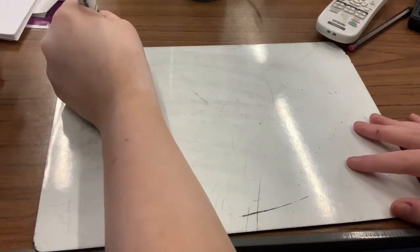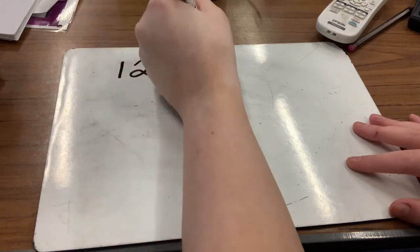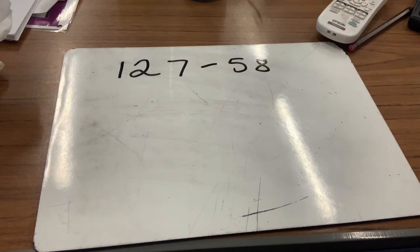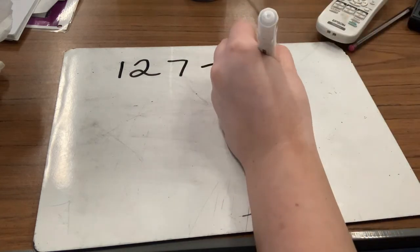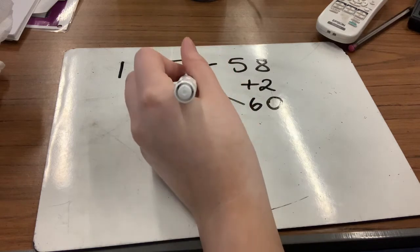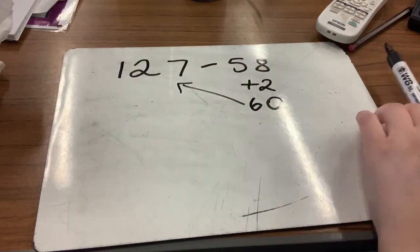Okay, last example we're going to do together. We've got 127 take away 58. Give that one a go. Pause me now. Okay, so I'm adding on two to take me to the next 10, which would be 60. Now I need to go from 60 all the way up to 127. Let's count our tens.